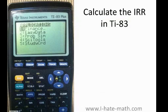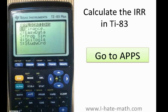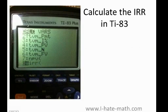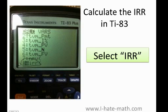This is how easy it's going to be. First, you're going to go ahead and go to Apps — that's this blue button right here — and you're going to click on Finance. Remember, you always click by pressing the Enter key. Now you're going to have a menu and you're going to click IRR with parentheses. It's going to look just like this.